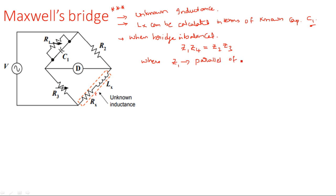Z1 is a parallel connection of R1 and C1. Remember: when the bridge has a parallel combination of resistance and capacitance in any arm, it is always better to work with admittance instead of impedance. If you go for admittance you can directly write the R1 and C1 terms straightforwardly.